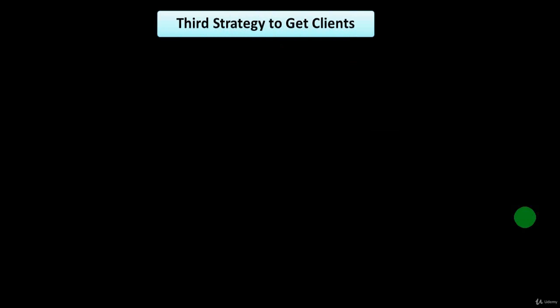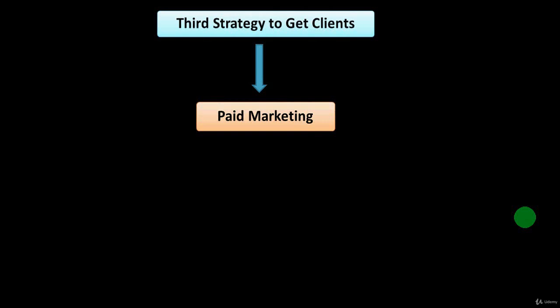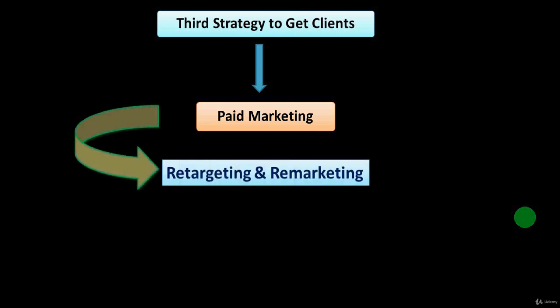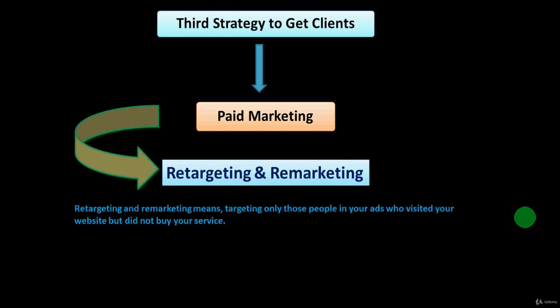The third strategy is paid marketing, but with a specific twist: retargeting and remarketing. Rather than simply running ads on Facebook, Instagram, YouTube, or Google targeting broad audiences, my strategy focuses on retargeting only those people who visited your website but did not buy your service. You retarget these visitors with an ad offering a discount coupon to encourage them to buy. Later in this course I'll teach you how to create discount coupons for your site, so you can convert a large number of your website visitors into customers.